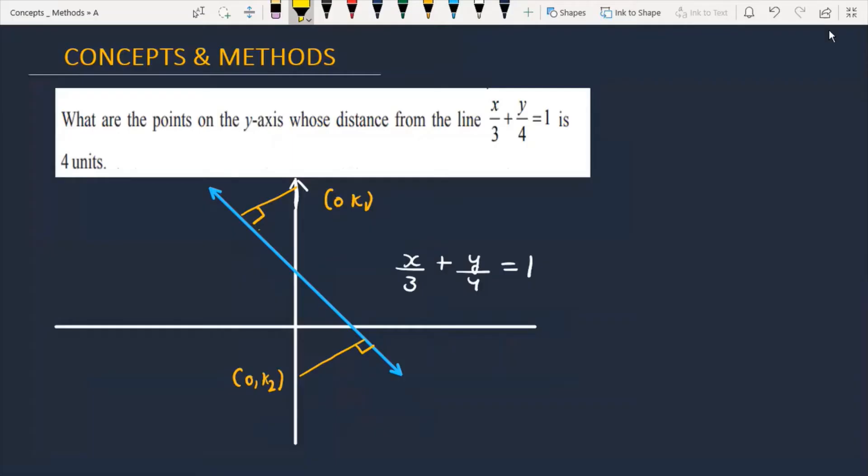The question is: what are the points on the y-axis whose distance from the line x/3 + y/4 = 1 is 4 units? So let's see how we will solve this problem.